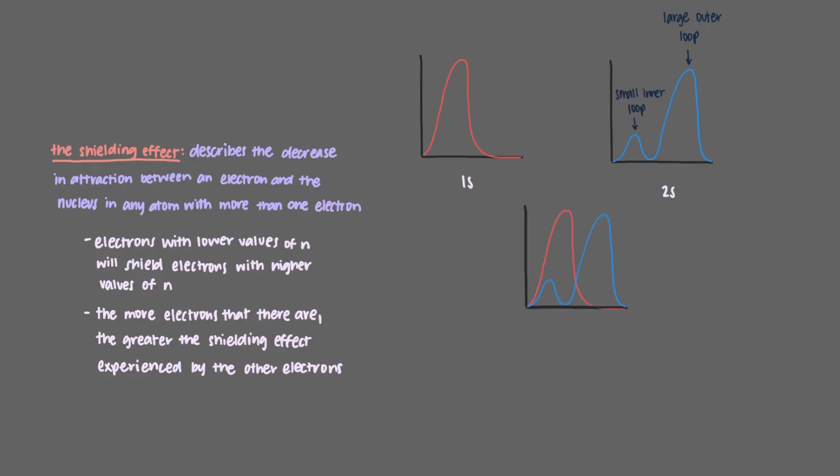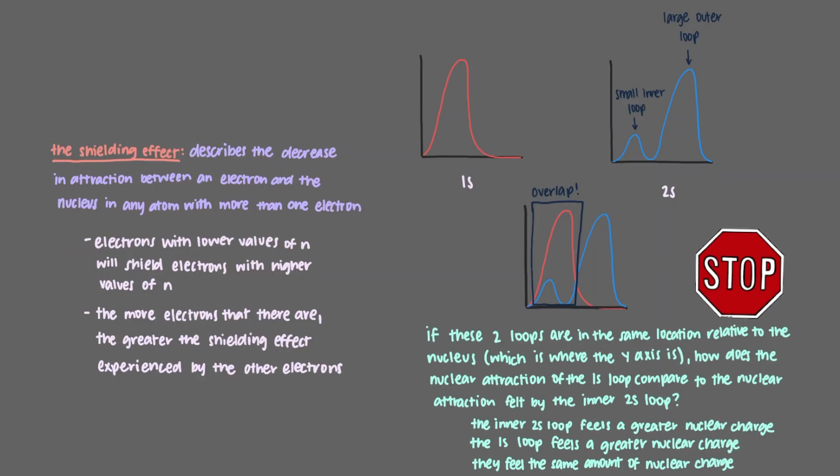When we draw the waves on top of each other, we see that one of the 2s loops and the entire 1s loop overlap. So if these two loops are in the same location relative to the nucleus, which is where the y-axis of our graph is, how does the nuclear attraction of the 1s loop compare to the nuclear attraction felt by the inner 2s loop?